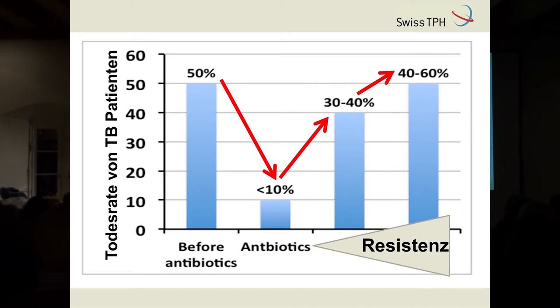Interessanterweise begann die Tuberkulose anfangs des 20. Jahrhunderts dramatisch abzunehmen, und zwar lange bevor wir die ersten TB-Medikamente hatten, die sogenannten Antibiotika. Das deutet darauf hin, dass allgemeine Verbesserungen in den Lebensumständen, aber auch in der Ernährung beispielsweise, einen sehr starken Einfluss hatten. Das heißt allerdings lange nicht, dass die Medikamente da keine Rolle spielten. Wenn man Patienten nicht behandelt, sterben mehr als die Hälfte daran – es können Monate vergehen, vielleicht sogar Jahre, aber schlussendlich werden die Patienten dann sterben.